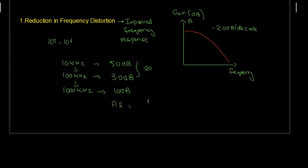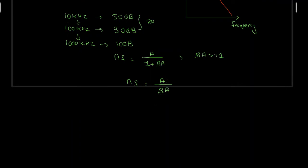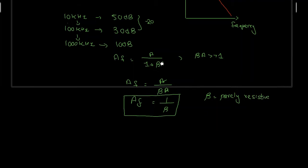The gain with feedback is equal to gain without feedback divided by the factor 1 plus beta·a. Since beta·a is very much greater than 1, this simplifies to Af = a / (beta·a), and the a's cancel, giving gain with feedback equal to 1 by beta. If we make this feedback circuit purely resistive, then the gain is going to be constant with frequency.